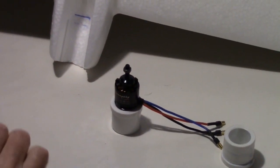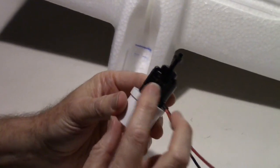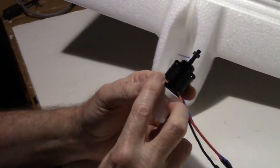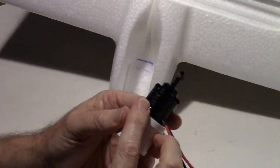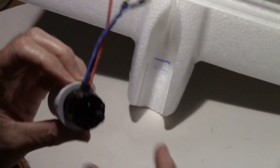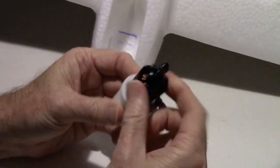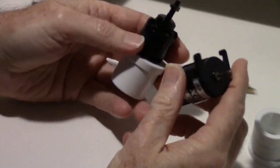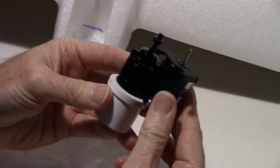I'm going to use the Sunny Sky motor here. This is a 2212-9 and the KV rating is 1400. These have the Japanese ball bearings, very smooth running, and they're very similar size and weight, maybe a little less weight actually than the motor that came with it.